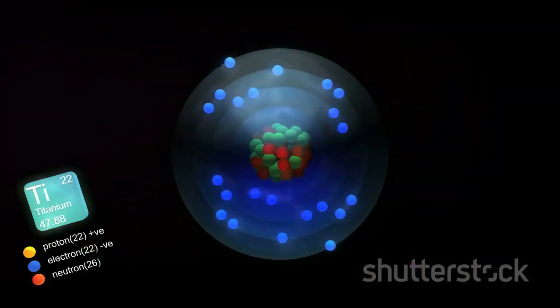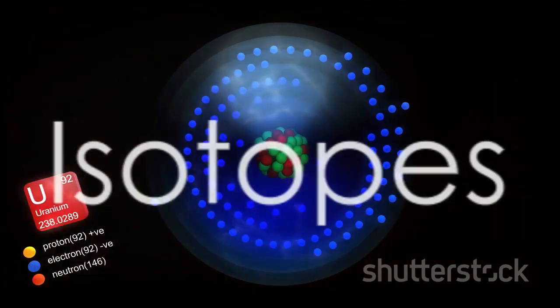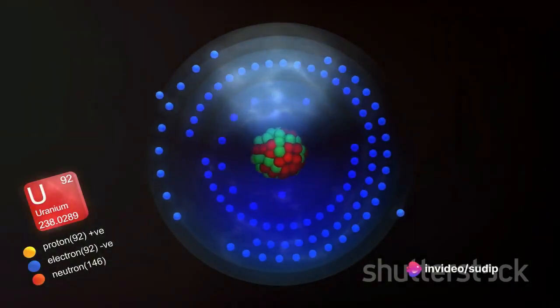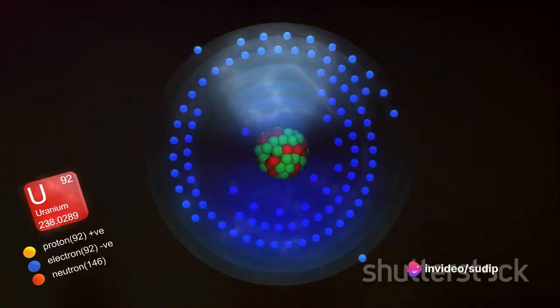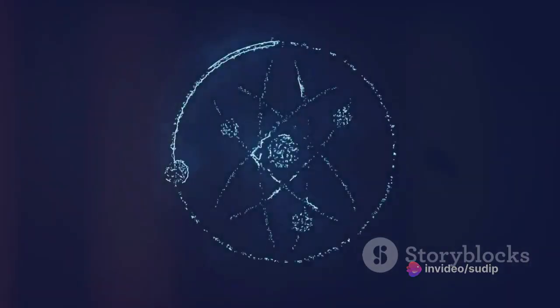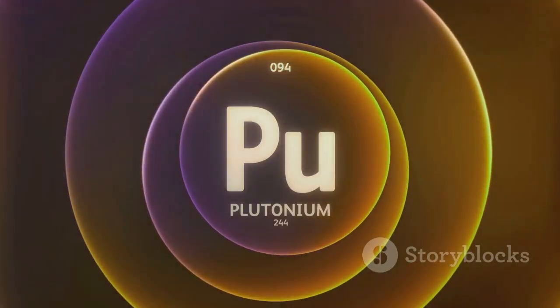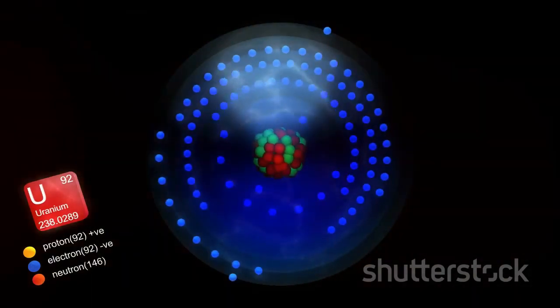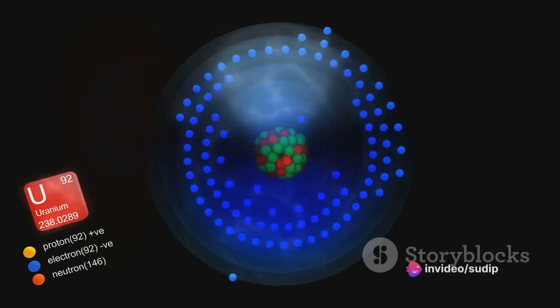Ever heard of isotopes? They're quite fascinating. Picture this: atoms of the same element but with a twist. They have different numbers of neutrons. Yes, you heard it right. They possess the same number of protons, hence the same atomic number, but their neutron count varies, leading to a different mass number. This anomaly gives birth to isotopes.